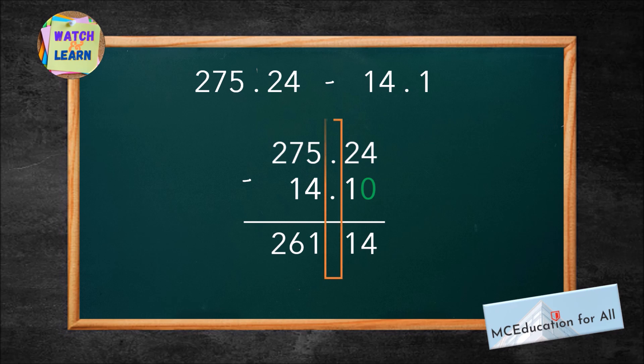Finally, copy the decimal point just below the other decimal points. Thus, the answer for 275.24 minus 14.1 is 261.14.